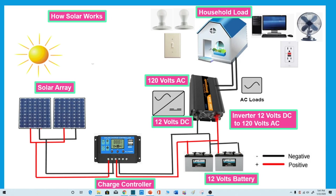A solar panel or PV inverter is a type of electrical converter which converts the direct current output of a photovoltaic solar panel into an alternating current that can be fed into your home.